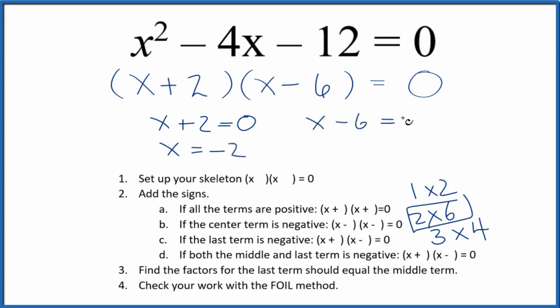Over here, x minus 6, that equals 0. Add 6 to both sides. x equals positive 6. So if you put 6 in for x here and do the math, this entire side will equal 0. Likewise, if you put negative 2 in for x and do the math, this will all equal 0.